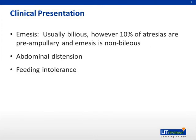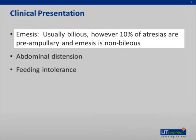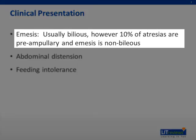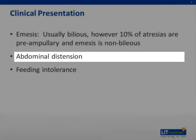The clinical presentation of the infant with congenital duodenal obstruction depends on the absence or presence of a membranous aperture, its size, and the location of the obstruction relative to the ampulla. Most cases present with bilious vomiting soon after birth. However, in about 10% of cases, the atresia is pre-ampullary and the vomiting is non-bilious. Infants variably exhibit abdominal distension.